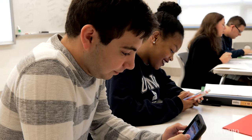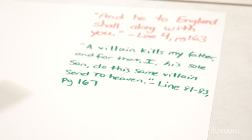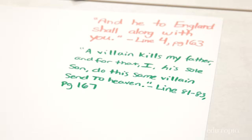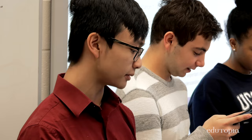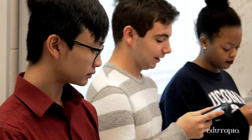So the students had ownership. They were able to explore what they wanted to explore. At the heart of it was analysis — do they understand what these characters are going through? Do they understand what Shakespeare is trying to get across? He runs away because he's guilty. And scene.